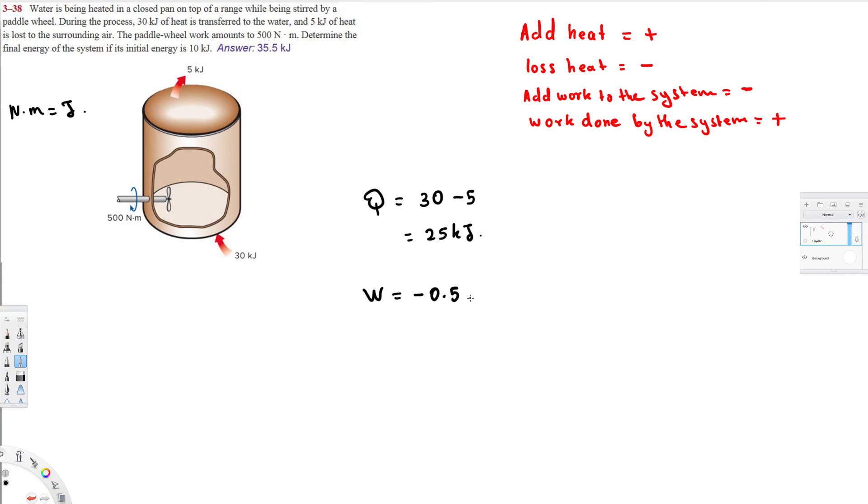That's going to be negative 0.5 kilojoules. So we have this one right here. Now we are going to apply the first law of thermodynamics. So according to that, Q is equal to W plus delta U, right? U is internal energy, so this delta U, from this one we can calculate the final energy.